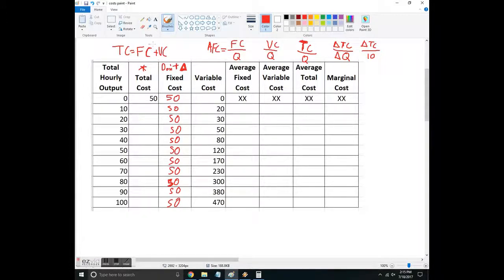Then I'm going to just add to get total cost. And now I've got fixed costs, always 50, and then I've got the variable cost here. So I can fill that in: 80, 130, 170, 220, 280, 350, 430, and 520.